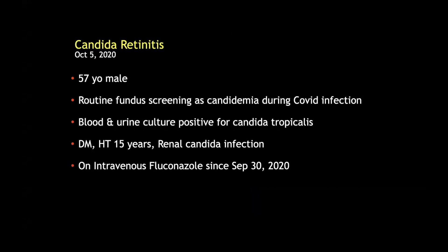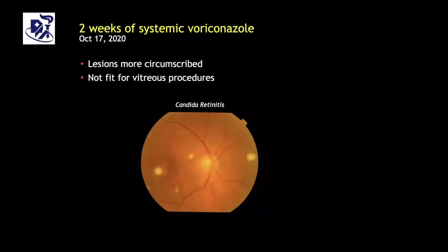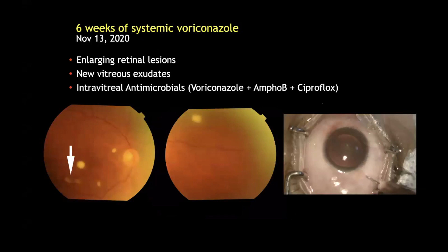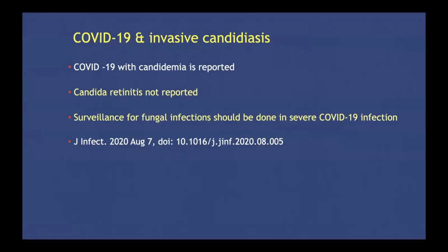In October last year, we had a 57-year-old male who came for routine fundus screening as he had developed candidemia during his COVID infection. He was on intravenous fluconazole at this time. Evaluation revealed multiple candida retinitis lesions in the right eye. We switched him from fluconazole to voriconazole because of its superior vitreous bioavailability. There was initial improvement with subsequent worsening, so he was treated with intravitreal antimicrobial agents with rapid resolution and complete clearing of all lesions at 12 weeks after the injection. Notably, invasive candidiasis and candidemia have been reported with COVID-19, but candida retinitis has not yet been reported.